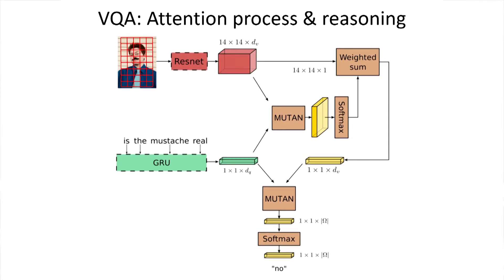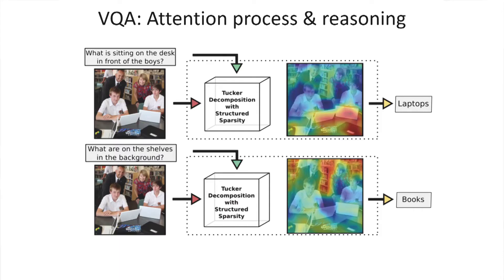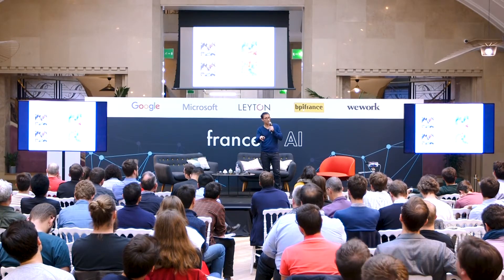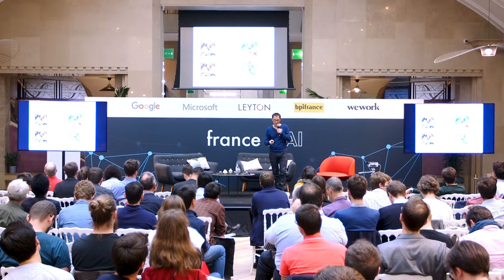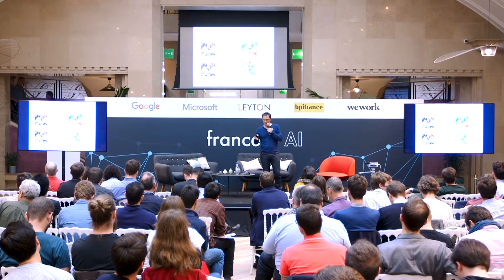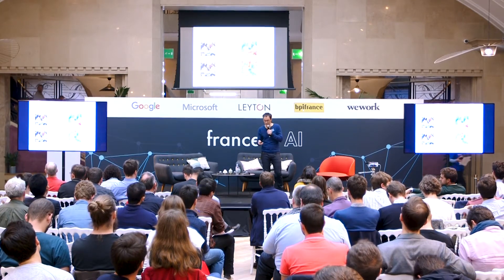For example, with two different questions on the same image: 'What is sitting on the desk in front of the boy?' focuses attention on the foreground, producing the heat map highlighting that region and yielding the answer 'laptops.' Meanwhile, the bottom example focuses on the background and produces the answer 'books.'